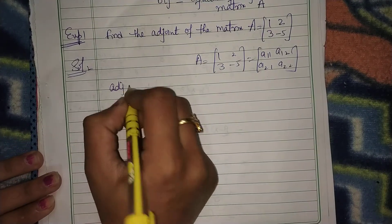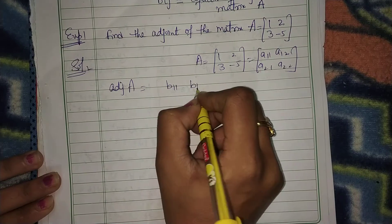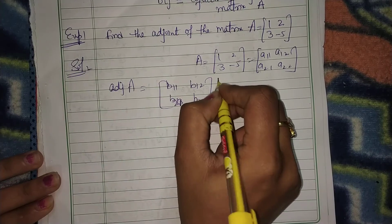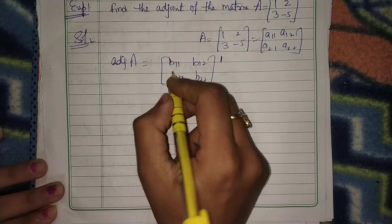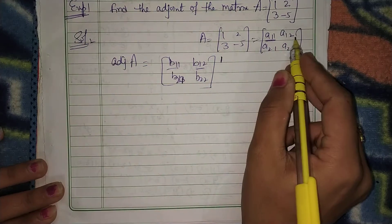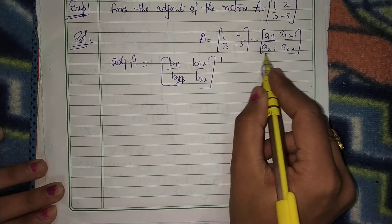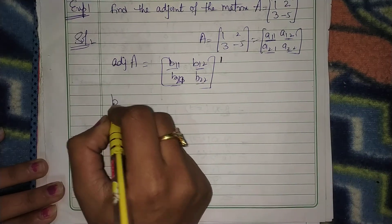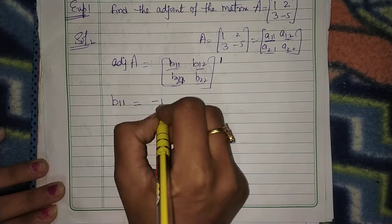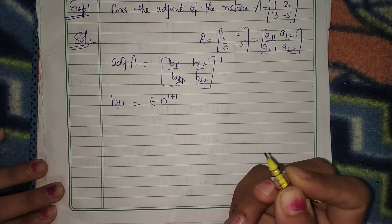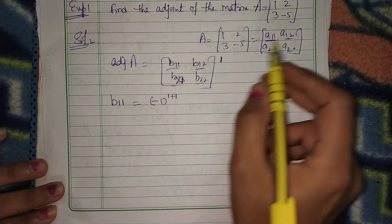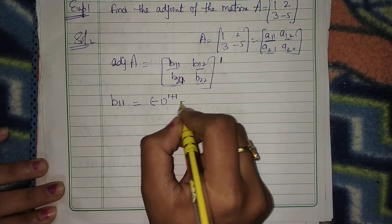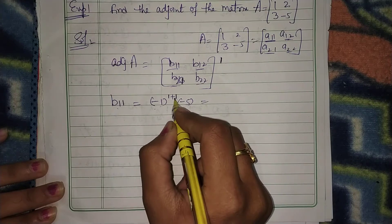So what will be adjoint of A? It will be [[B11, B12], [B21, B22]] — by definition, the transpose of this matrix. Where B11 is cofactor of A11, B12 is cofactor of A12, B21 is cofactor of A21, B22 is cofactor of A22. So what is B11? It is cofactor of A11. That is (-1)^(1+1) times the minor of A11, which is -5. Since (-1)^2 is 1, B11 is -5.